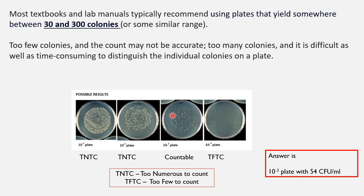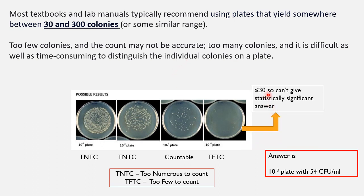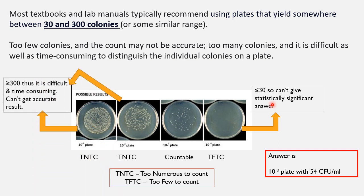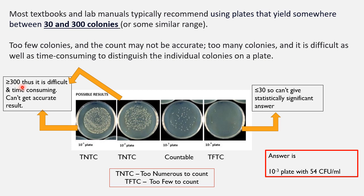Don't get confused about which plate to select — remember the range is 30 to 300. Less than or equal to 30 colonies means you cannot give a statistically significant answer, so if asked to calculate the original microbial load in the stock sample, you cannot accurately do so. More than or equal to 300 colonies is difficult and time-consuming to count and also yields inaccurate results. Thus, the 10^-3 plate is your answer in this case.